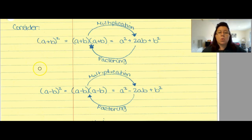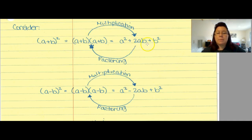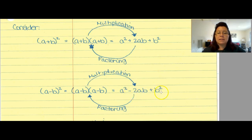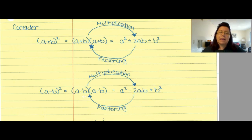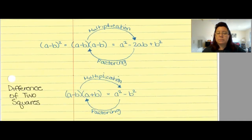In a previous lecture we talked about foiling out squares. (a + b)² equals (a + b)(a + b), which foils to a² + 2ab + b². And (a − b)² equals (a − b)(a − b), which gives a² − 2ab + b². If I'm given a polynomial in the form a² − 2ab + b², I can factor it back into (a − b)².